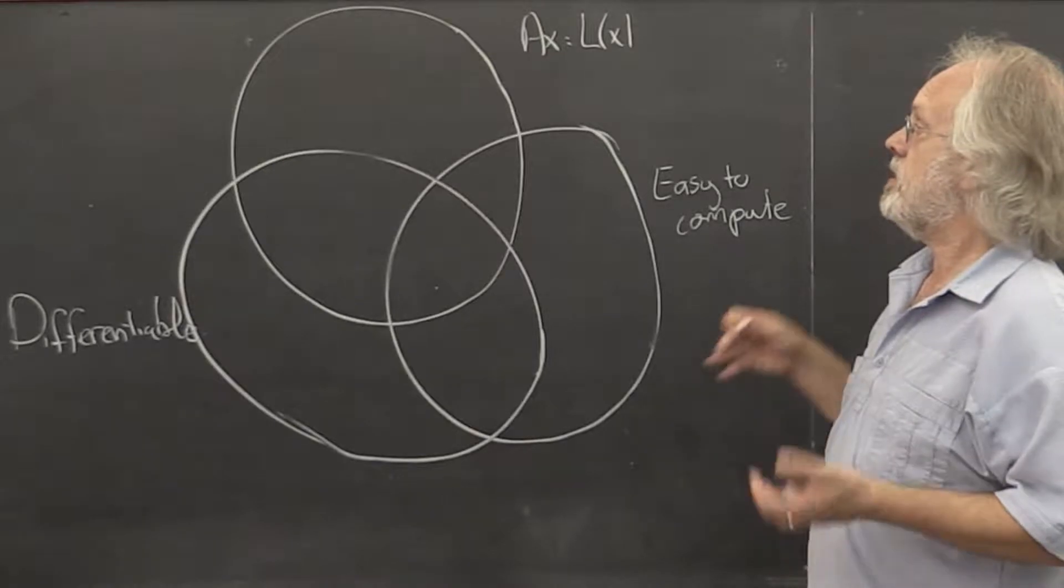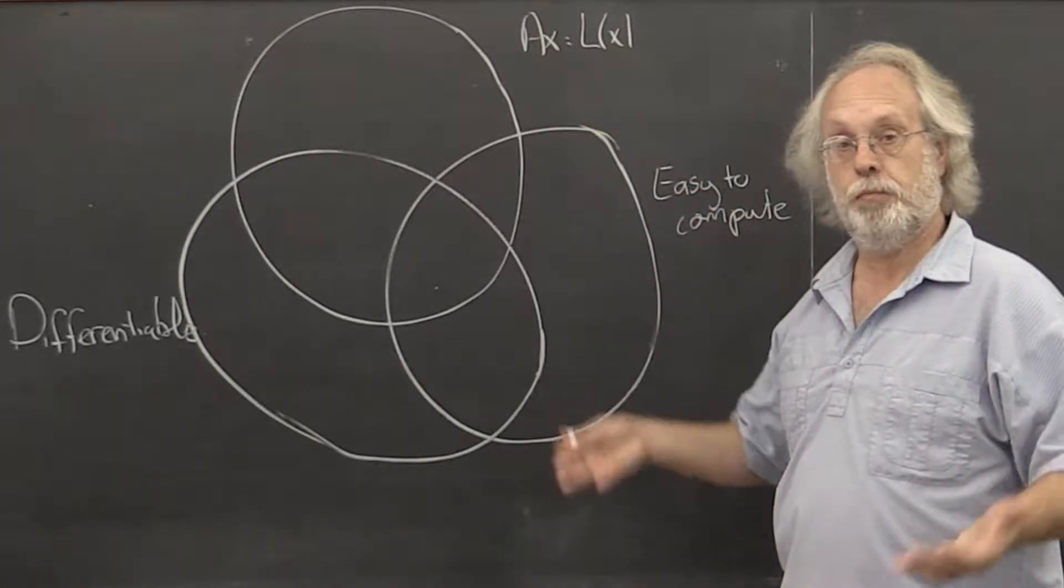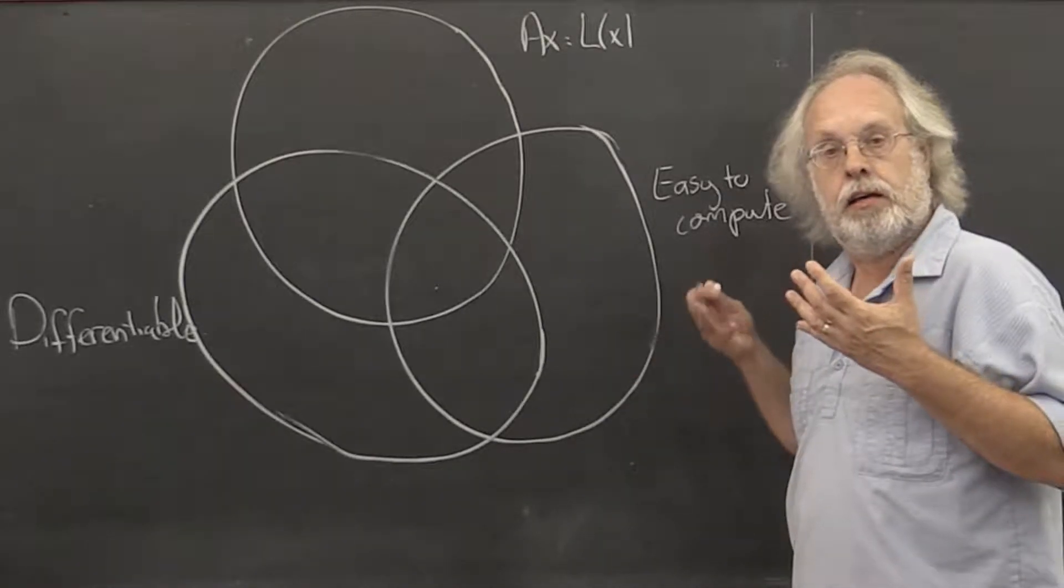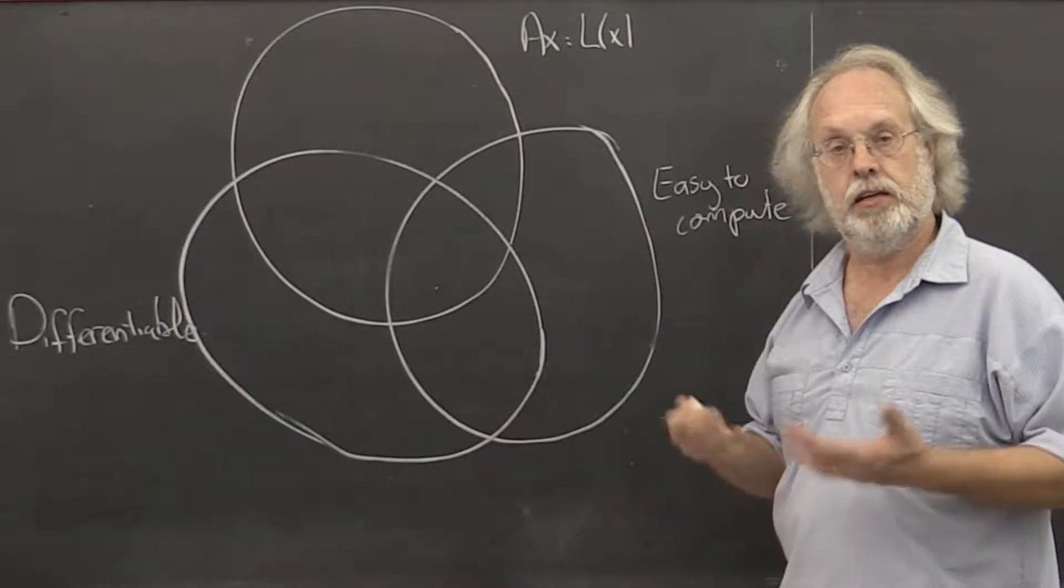For example, some matrix norms have the property that in measuring the magnitude of the matrix, that magnitude somehow has meaning when it comes to the magnitude of the underlying linear transformation.